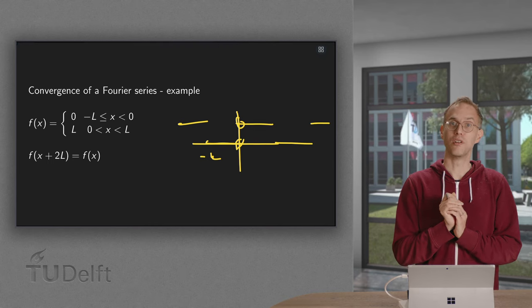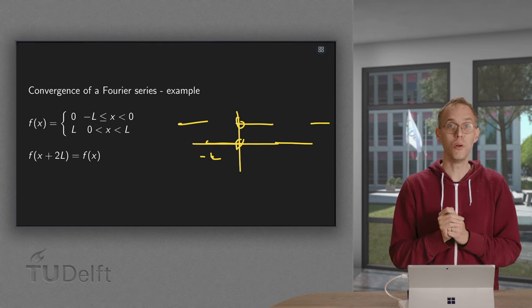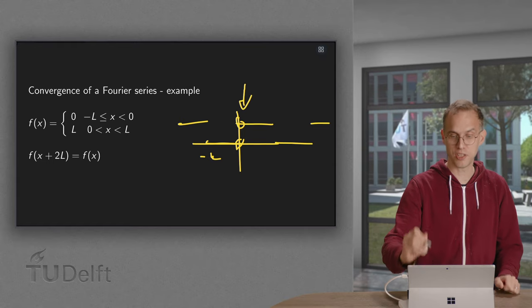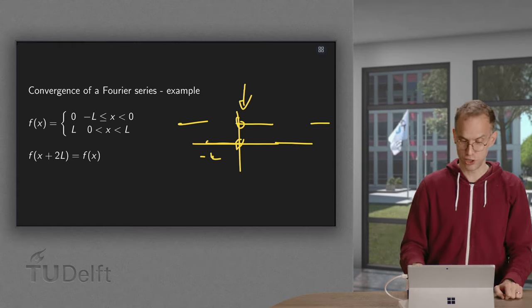Let us compute the Fourier series, let us see how it looks, and let us especially take a look at what happens there at the point where we are jumping.